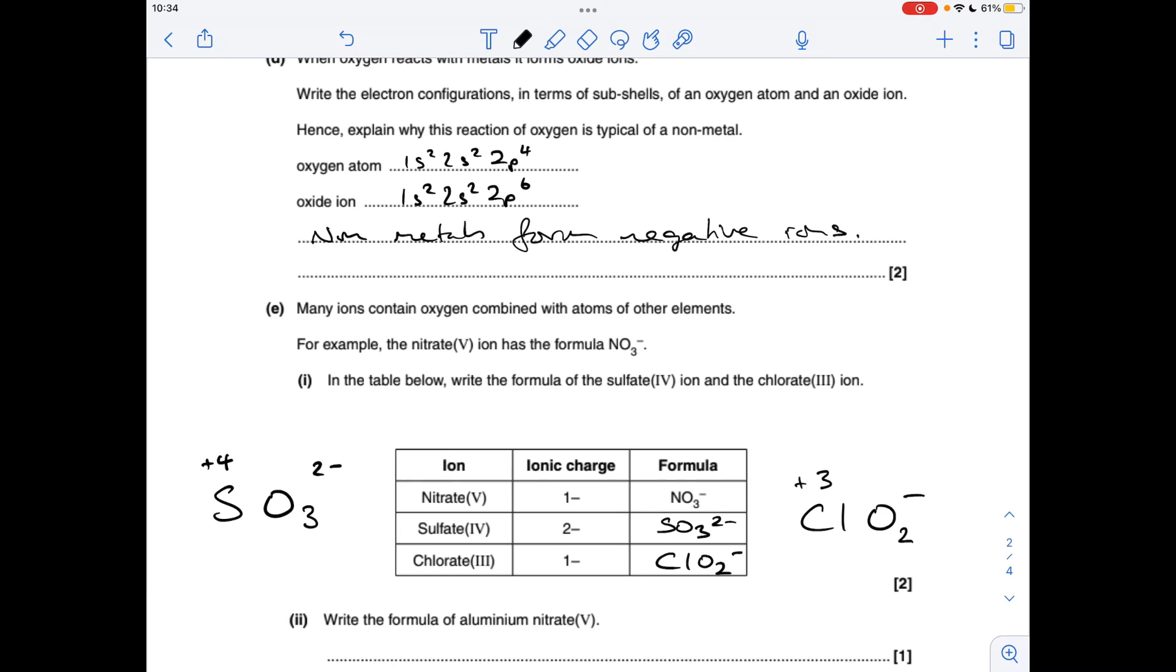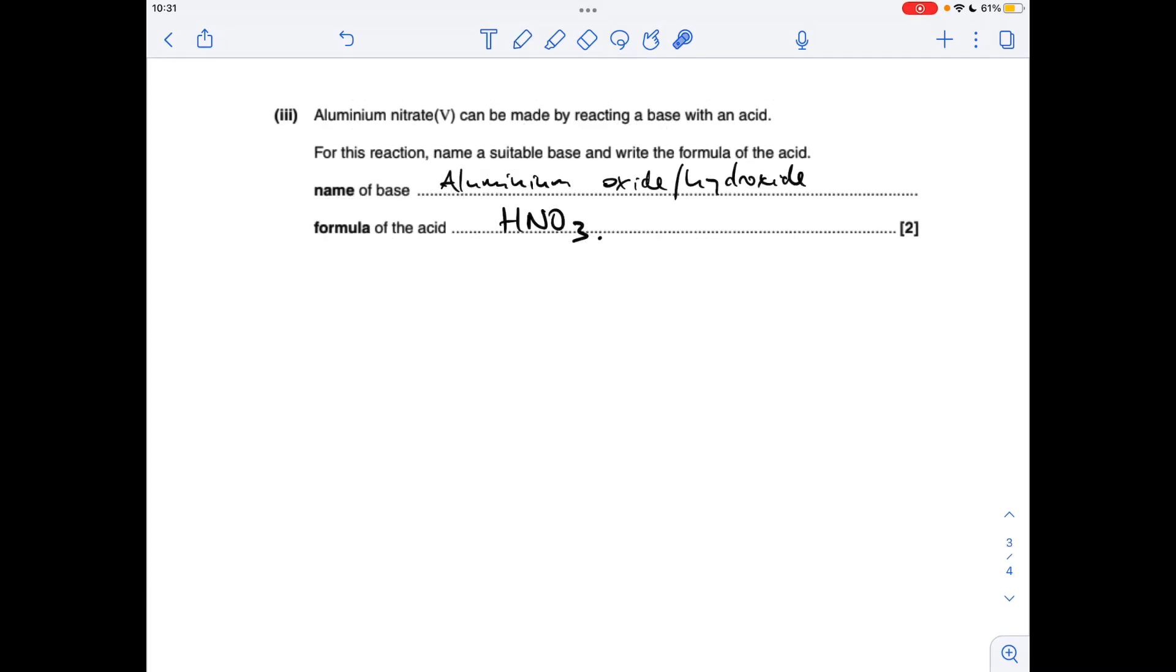Formula of aluminium nitrate(V), so we've got the formula of the nitrate(V) ion in the table. Aluminium forms a 3 plus ion, so it's going to be Al(NO3)3.